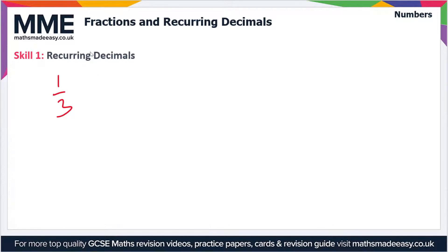For instance, if we have the fraction one third, this is equal to one divided by three. Now one divided by three is equal to 0.333... and so on, so there's an infinite amount of threes here. So one divided by three we would say is equal to 0.3 recurring, and we use this dot above the three.